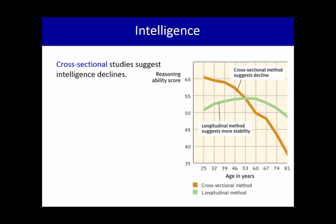The thing about the cross-sectional method is it's quick. I can gather these different age groups all today, administer the test and have my data analyzed by tomorrow. But it may be inaccurate. The longitudinal method is what's represented in the green bar.